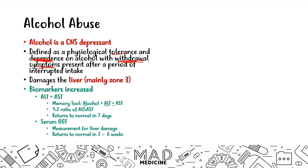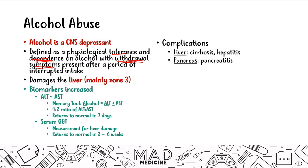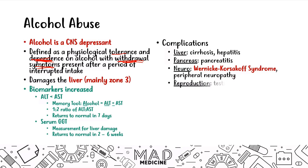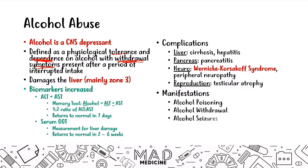After 1 week, you want to measure serum GGT instead of AST and ALT. Complications of alcohol abuse include cirrhosis, hepatitis, pancreatitis, Wernicke-Korsakoff syndrome, peripheral neuropathy, and testicular atrophy. Alcohol abuse can manifest as alcohol poisoning, withdrawal, seizures, and hallucinosis. The most dangerous manifestation is delirium tremens.